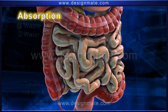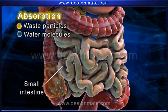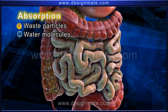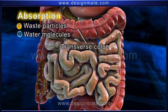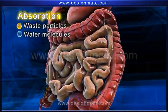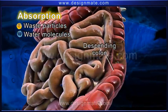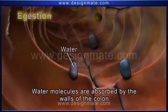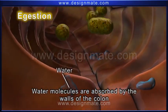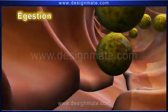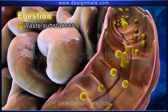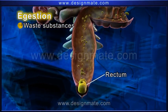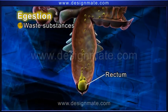The remaining unabsorbed waste particles and water molecules pass through the small intestine and finally reach the ascending colon of the large intestine. From here, it passes through the transverse colon to the descending colon. Most of the water molecules are absorbed by the walls of the colon, and the waste substances are collected in the lowermost part of the colon known as the rectum, from where they are excreted out.